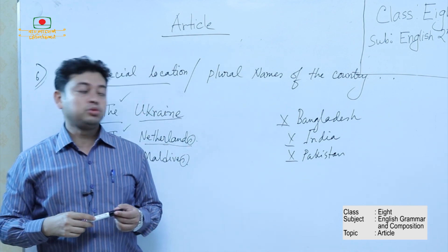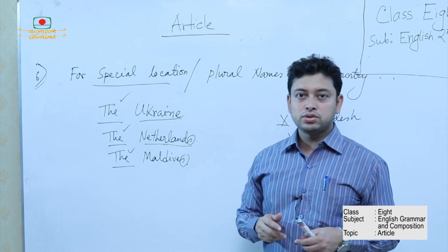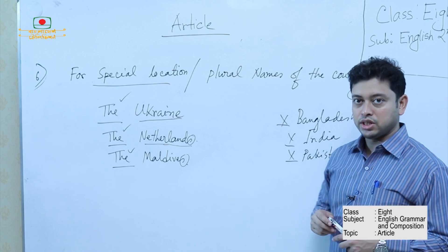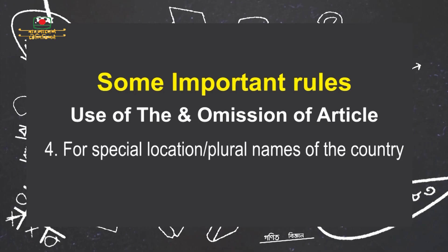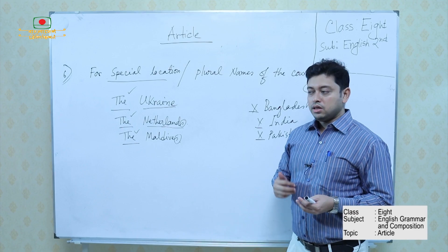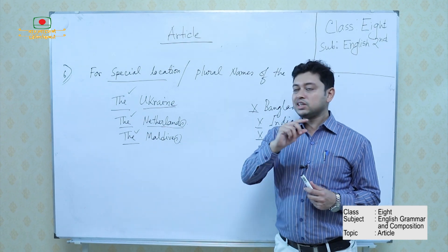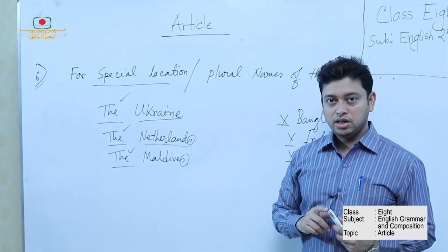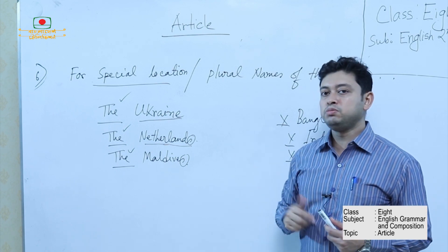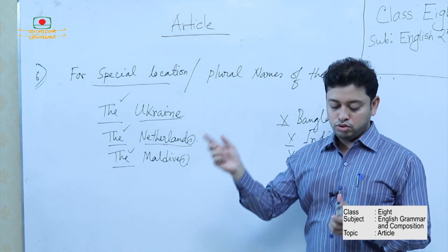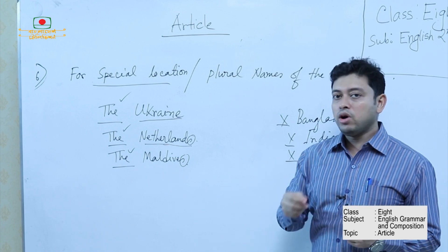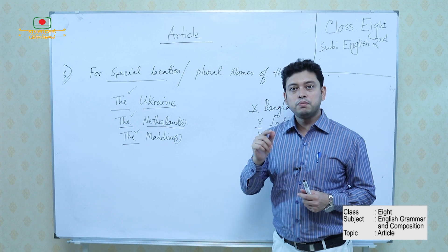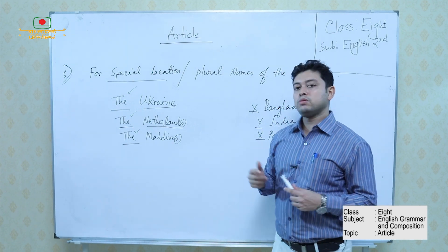Now let us sum up. Today we have discussed some very usual rules practiced in class 6 and 7, and some important rules where students commonly make mistakes. Remember: in your final exam, you will not get scattered sentences where you fill in A, AN, THE, or cross. There will be a particular passage. You have to go through it line by line, understand which rule applies, and fill in accordingly.